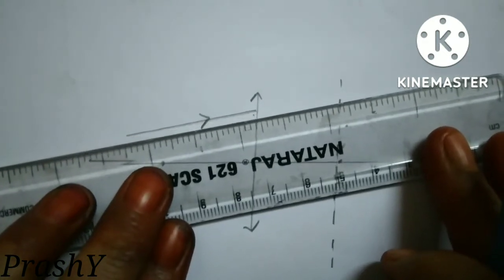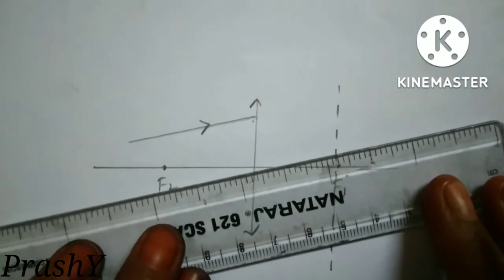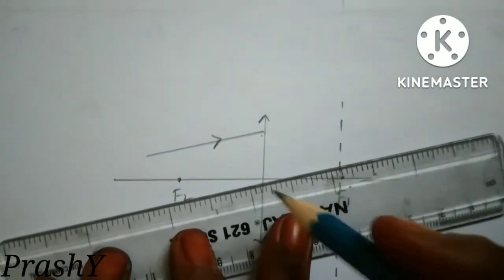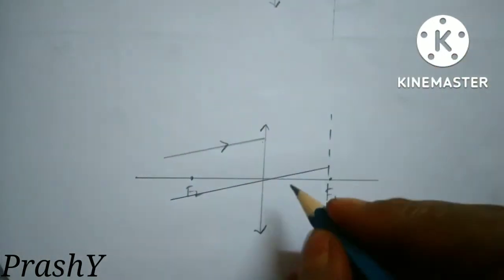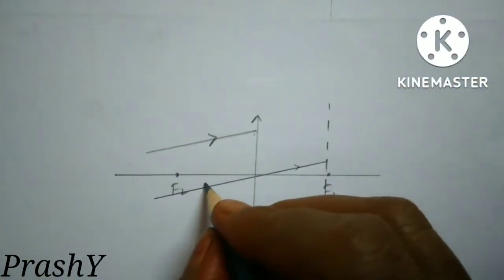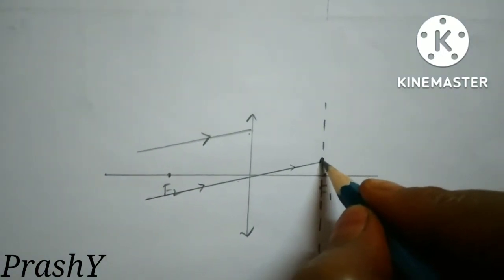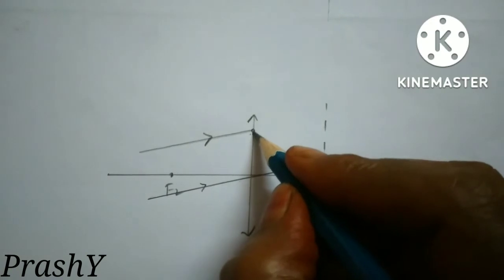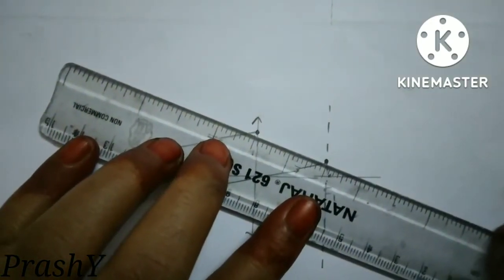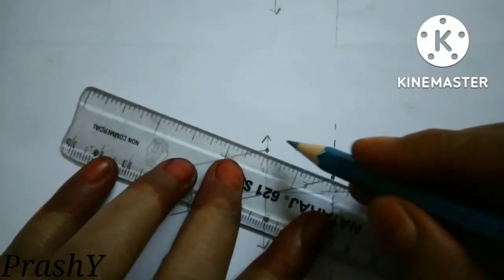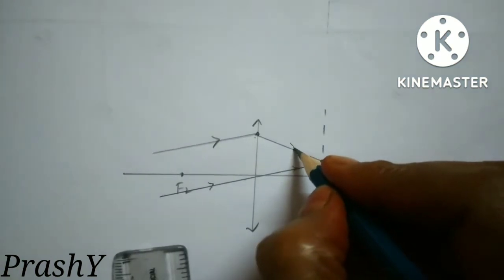Now take the original incident ray and draw a parallel line passing through the optic center. The ray passing through the optic center proceeds undeviated. This gives the point on the focal plane. Then join this focal plane point to the point of incidence on the lens. This gives the refracted ray.